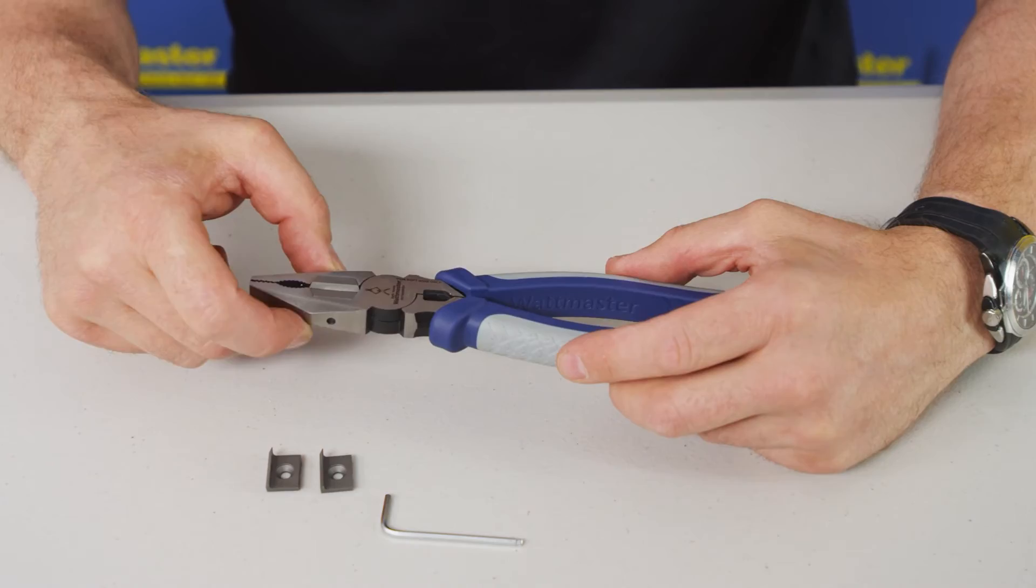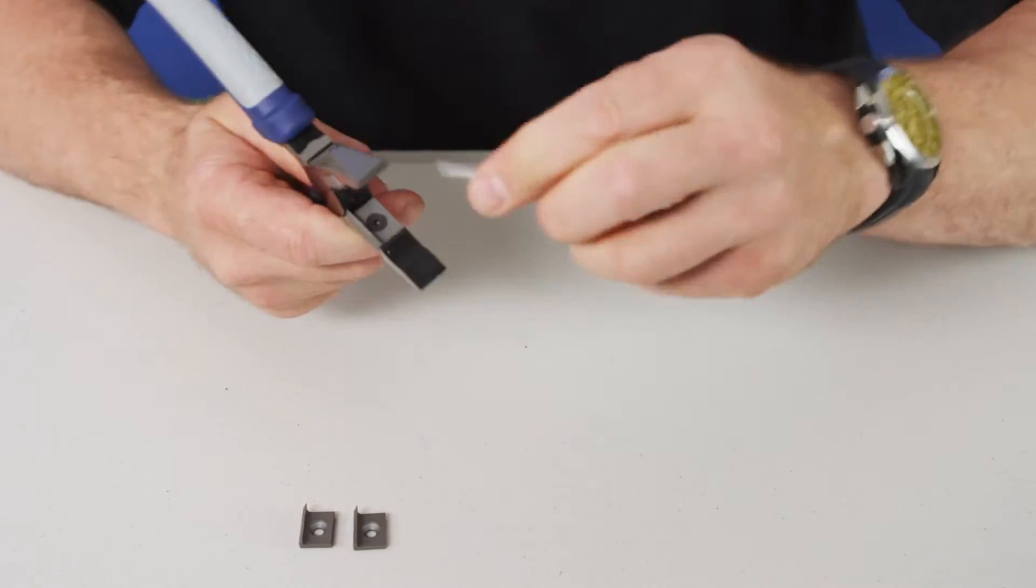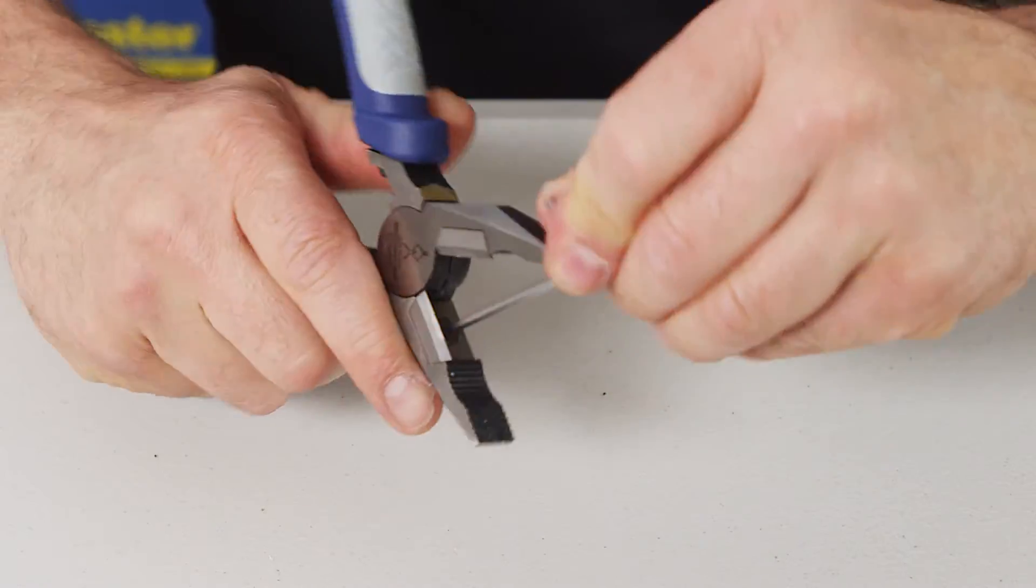Now I'll demonstrate how easy it is to remove the blades and fit a new pair in. There's a couple of grub screws, there's one there and one there. I'll now grab my allen key and remove the first grub screw.